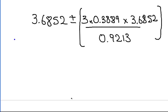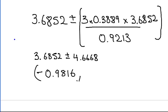So again, a little bit of number crunching, and if you just bear with me, this works out to be 3.6852 plus or minus 4.6668. So when you work that out a little bit more, you would get 3.6852 minus 4.6668, that would work out to be minus 0.9816. If you add them, 3.6852 plus 4.6666, you would get 8.352.